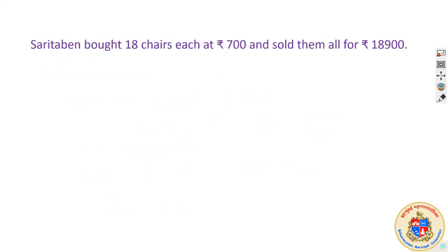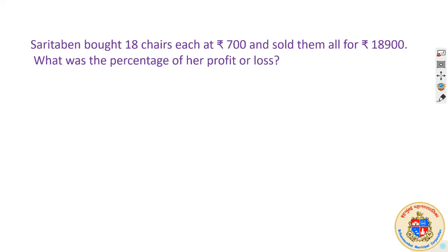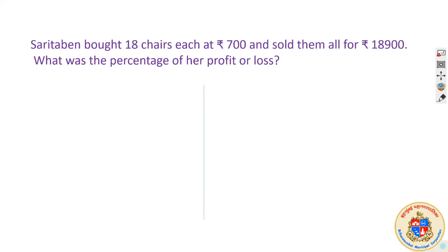One more sum is there. You are getting more sums explained and you will be doing each sum in the exercise yourself, so that you will become smart enough to solve this kind of question. Saritha Ben bought 18 chairs each at Rs. 700 and sold them all for Rs. 18,900. What is the percentage of profit or loss? Straightforward question — no tricky thing.